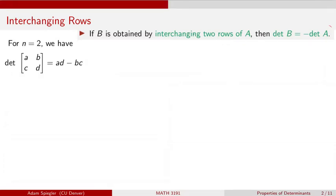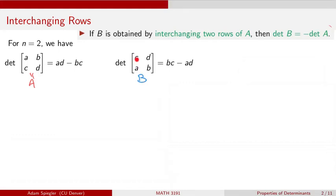If I have a matrix A, for two-by-two matrices the determinant would be AD minus BC — the product of the diagonal entries minus the product of the off-diagonal entries. If we were to interchange those two rows, making AB the second row and the second row the first row, we obtain a new matrix B. The determinant of B would be BC minus AD, which is exactly the opposite order of the original determinant of A. So we can see that the determinant of this new matrix is exactly minus one times the determinant of the original matrix — we just flip-flop the ordering of that difference.